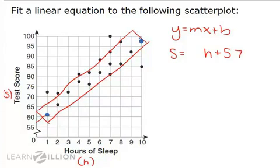Now, again, we have to do a little estimation because it's not on exact grid lines. It looks like this point is at 1, 61, one hour, 61 on a test score. And this point is 10 hours and about 97.